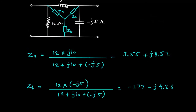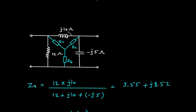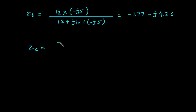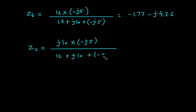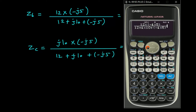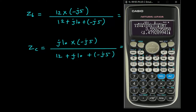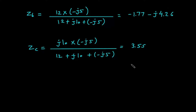Now ZC. ZC is equal to J10 multiplied by minus J5, divided by the same denominator, that is 12 plus J10 plus minus J5. Computing J10 multiplied by minus J5 over that denominator gives 3.55 minus J1.47. This is the value for ZC.